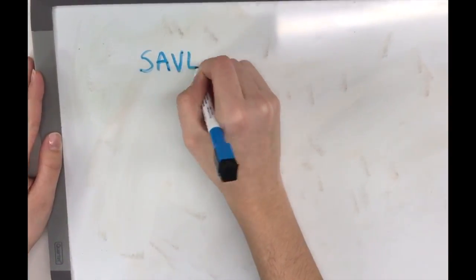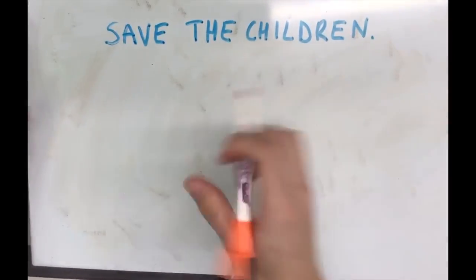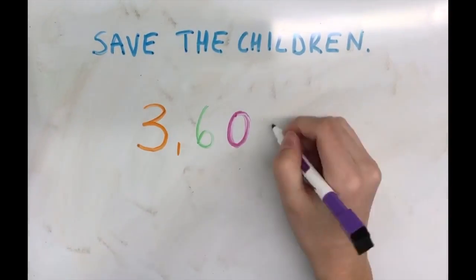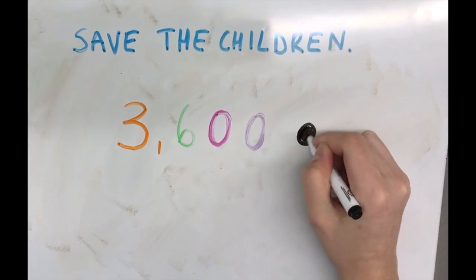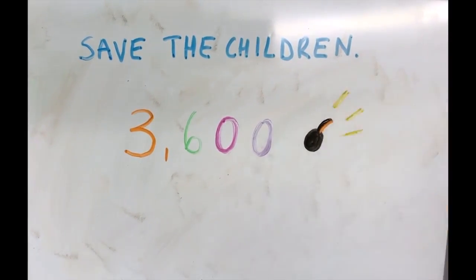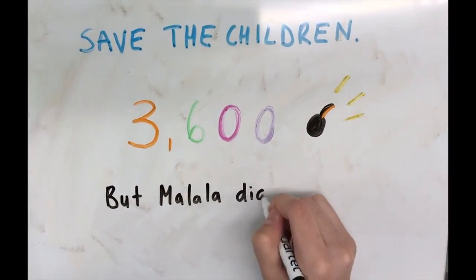Save the Children found that, in 2012, there were 3,600 documented attacks on education, including violence, bombing of schools, torture, and intimidation against children and teachers, resulting in death or serious injuries. Many girls were terrorized and stayed home, but Malala defiantly continued to go to school.